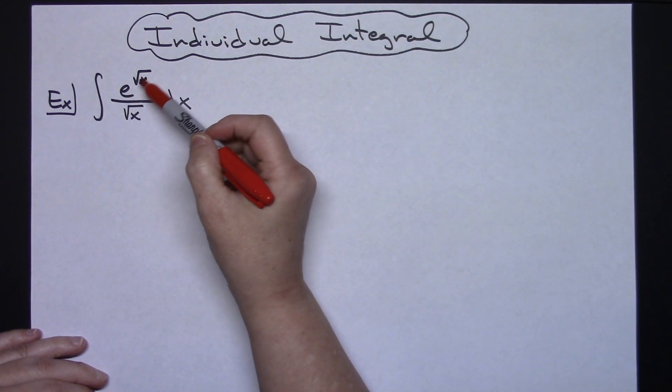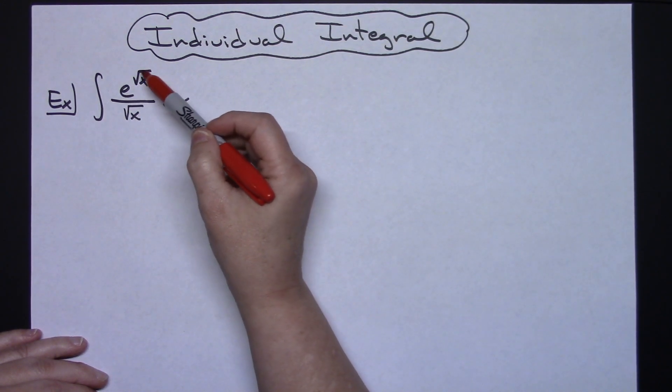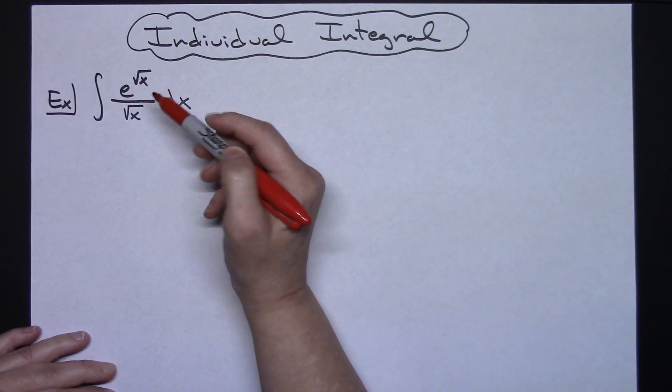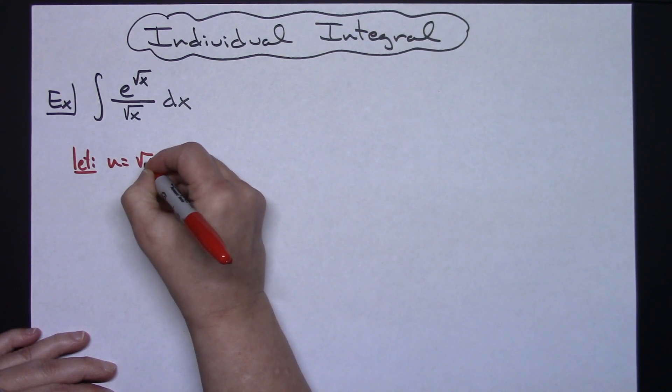So what I'm going to do is I'm going to take a look at this numerator and I'm going to see I've got e raised to some power, so that power right there is what I am going to allow my u to be. So I'm going to start with letting u equal square root of x.